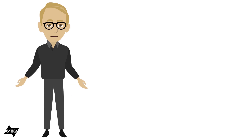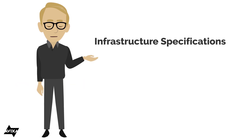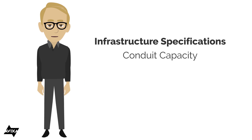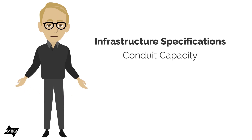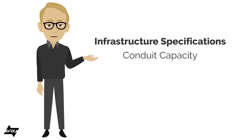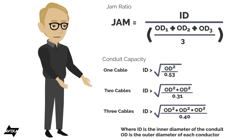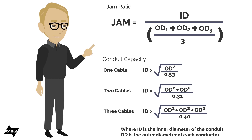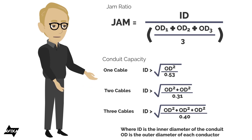One of the things we do in audio-visual design is our infrastructure specifications. Part of the infrastructure specifications is where we do conduit capacity — in other words, we're specifying how large a conduit we need for some of our cabling.